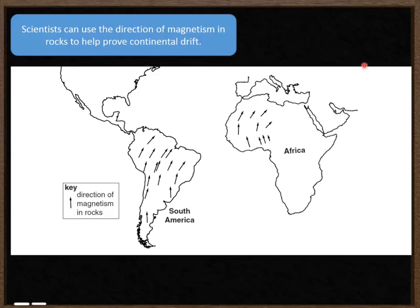So the question we now need to think about is how scientists can use the direction of magnetism to help prove continental drift. Here we have two continents and the direction of magnetism in the rocks that make up these continents is shown on the diagram here.